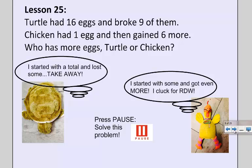So let's see what they both think, and it sounds like there's two different math problems, one for turtle and one for chicken. So turtle thinks, well I started with a total and then lost some, so turtle's sentence is going to be about taking away.